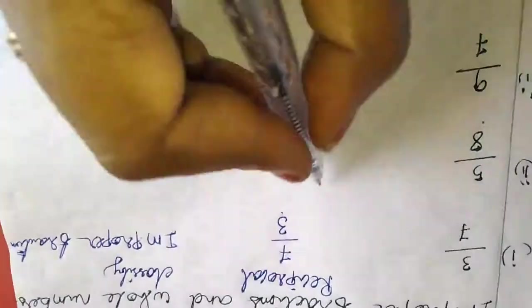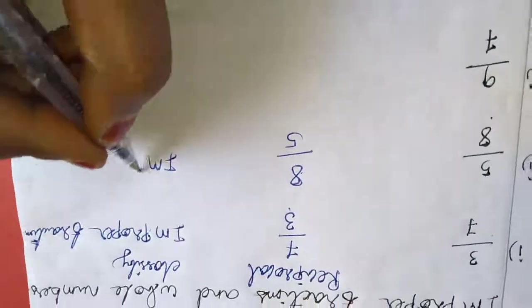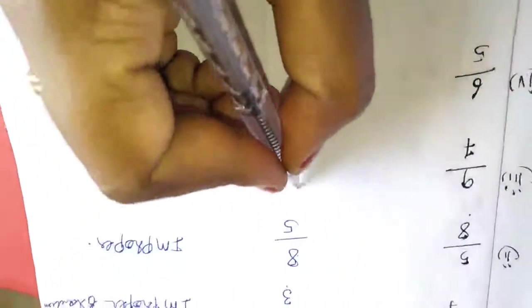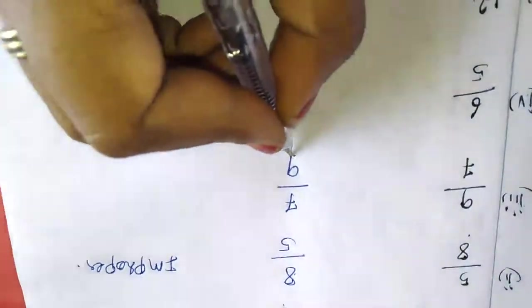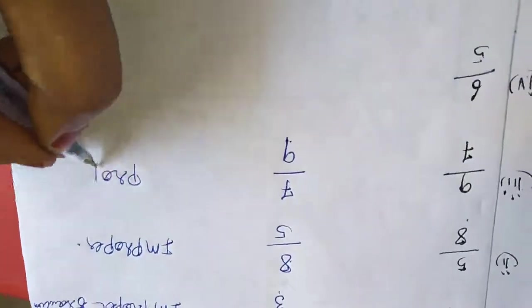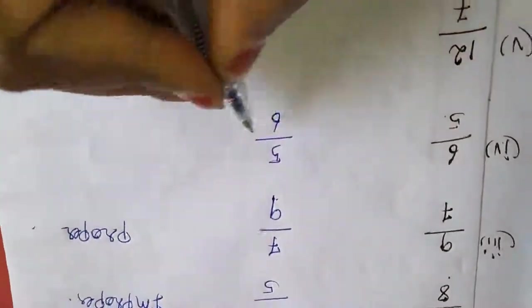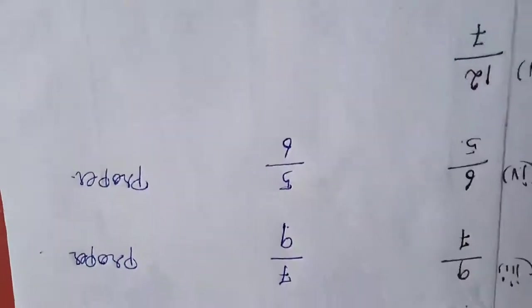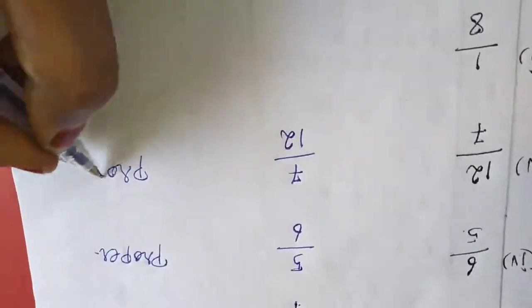Now the second one: its reciprocal is 7/9. Here the denominator is greater than the numerator, so this is a proper fraction. Next one: 5/6, this is also a proper fraction. And 7/12 — 7/12 is also a proper fraction only.